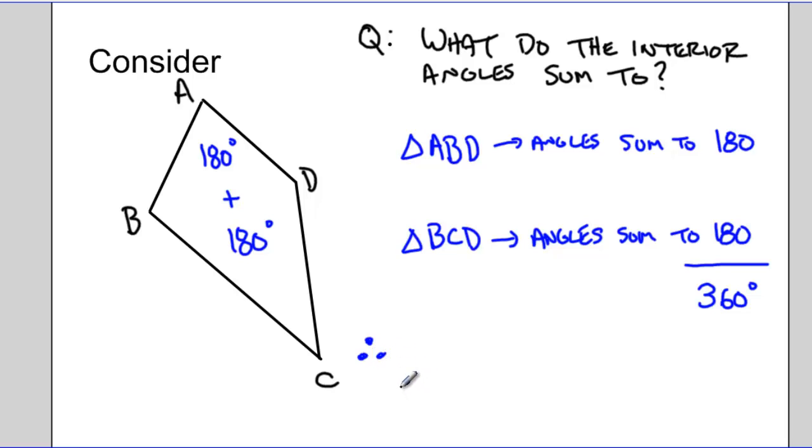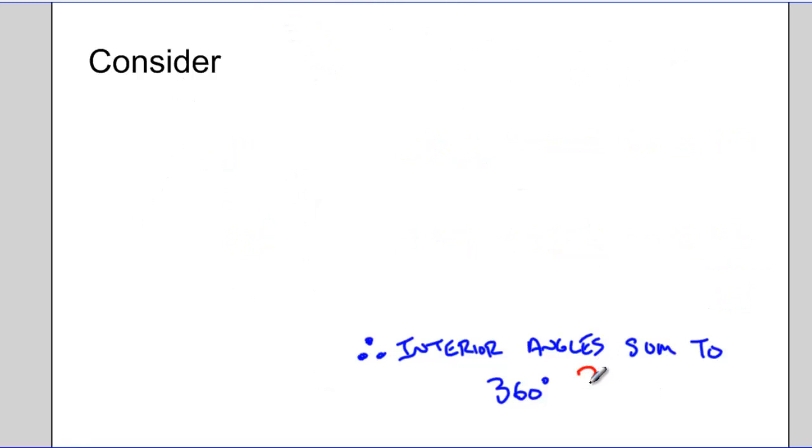So in this triangle, the interior angles of a quadrilateral sum up to 360 degrees. But that's just one shape, just one quadrilateral. Does it work for all quadrilaterals? So for now, let's just put a big question mark by our therefore statement.